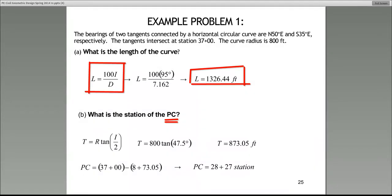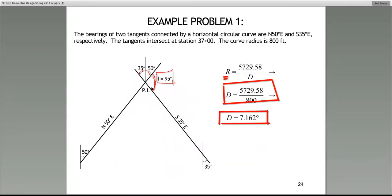Remember what they gave us - they told us the station of the PI. You take the station of the PI, which was given in this case as 37+00, and you subtract the tangent, the length of the tangent from it in terms of stations, and what you end up with is the station of the PC.